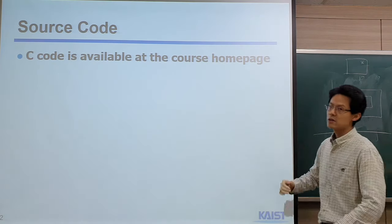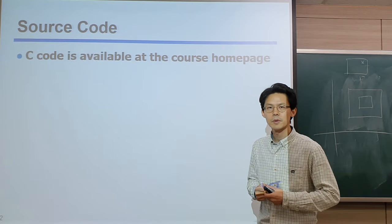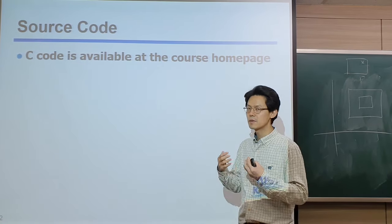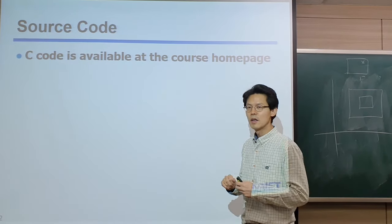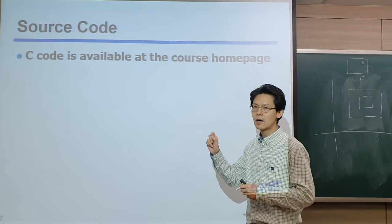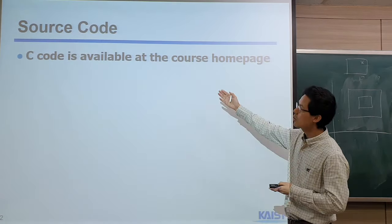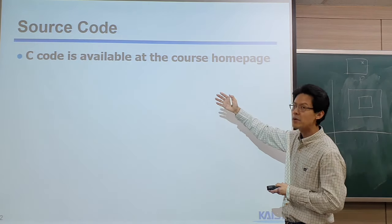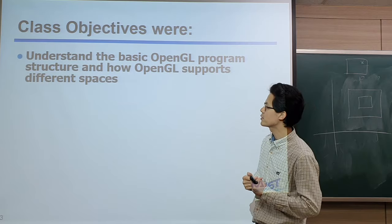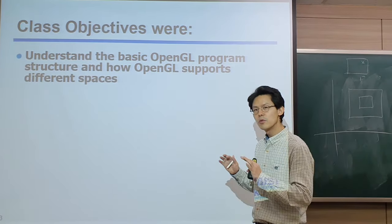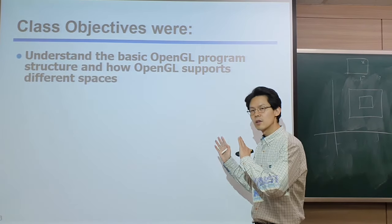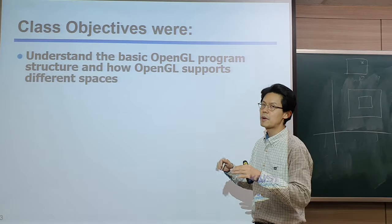So far, I ran over some code — I know it was tedious, but looking at code really should be done by yourself, sitting in front of your computer, spending some time to see how the different structures work together. The PA1 skeleton code should be available after this lecture on the course homepage. I wish you can understand at a high level the basic OpenGL program structure and how OpenGL supports the different spaces — the mapping is done by OpenGL through the GPU.